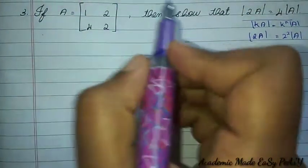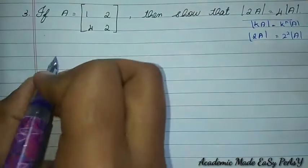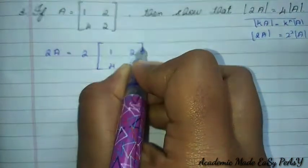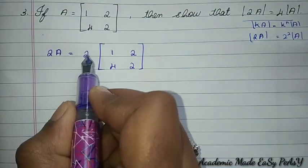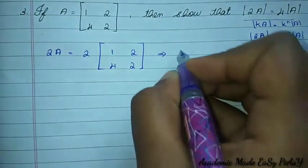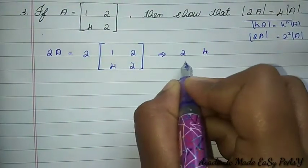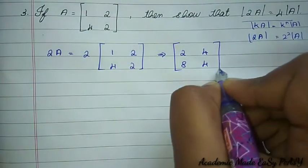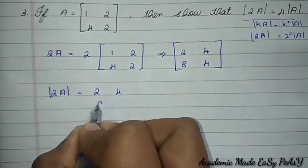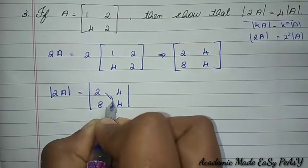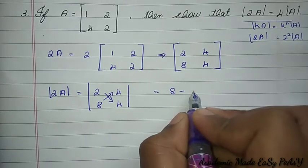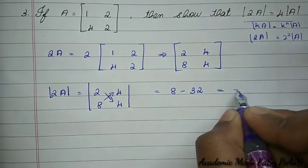2A means 2 times each element of matrix A. The constant multiplies every element, so the matrix 2A = [2, 4; 8, 4]. Now we compute det(2A) using the x method: 2 × 4 − 4 × 8 = 8 − 32 = −24.